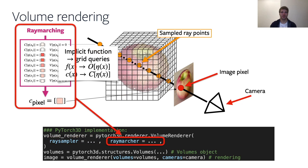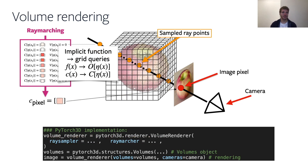The big difference comes where instead of having an implicit function, we have an object of the Volumes class, which enters the volumetric renderer. The volumetric renderer also takes the camera as input so it knows from which viewpoint we are entering the scene.